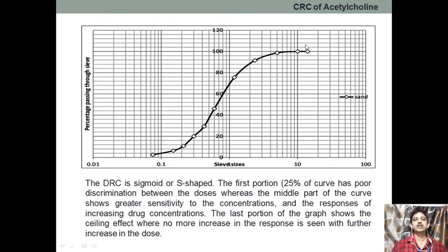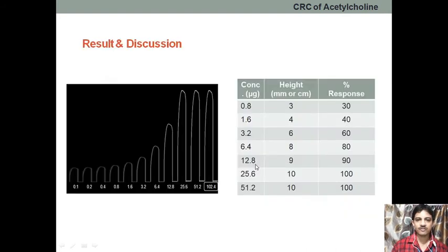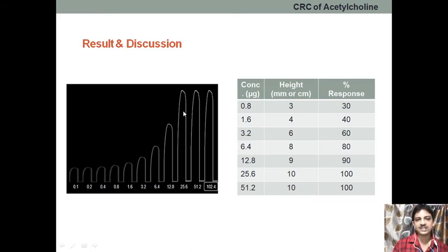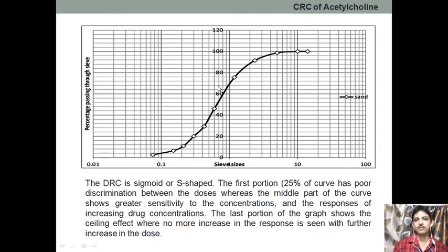That is the graph which is DRC graph or the CRC graph, which is S-shaped or the sigmoid shape graph. The first portion, that means 25% of the curve, has poor discrimination between the doses. As we have seen, first doses are not that much prominent, discrimination is less. Whereas the middle portion shows the highest sensitivity followed by, after 100, it will be the same. So, greater sensitivity in the middle portion as we are increasing the concentration. And last portion of the graph shows the ceiling effect. The ceiling effect means the response is not increasing.